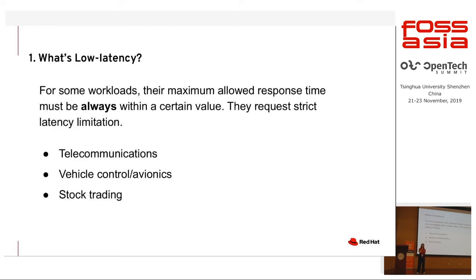The next example is vehicle control, especially the self-driving car. Sometimes the self-driving car needs to transmit data from the data center or the navigation systems. If there is high latency and the car needs to turn left or turn right at a crossroad, it may miss the operation, fail to arrive at the destination, or even worse, cause a car accident. The third example is stock trading. In the stock market, the price of each stock changes every second. If there is high latency, the trade may fail or the outdated price may mislead people.